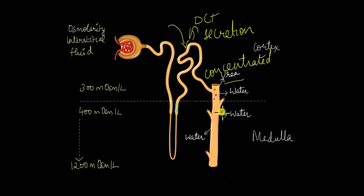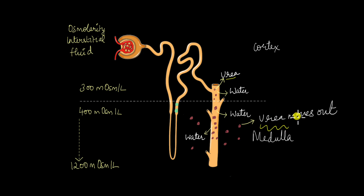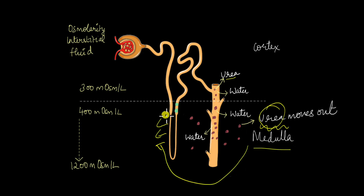As the filtrate reaches the collecting duct, more water is reabsorbed into the interstitial space. The filtrate in the collecting duct also has urea. As more and more water moves out of the collecting duct, the urea concentration inside increases, creating a concentration gradient for urea as well. So a little bit of urea also moves out into the interstitial space. Urea is our nitrogenous waste, so why reabsorb it? That's because urea also contributes to the concentration gradient of the medulla, driving reabsorption of water from the descending limb by making the medulla more concentrated. That's why our body can tolerate a small amount of urea.